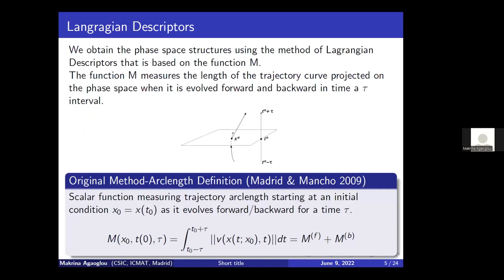The method of Lagrangian descriptors is a scalar trajectory diagnostic similar to other chaos indicators such as Lyapunov exponents or alignment indices. This method has the capability of revealing the invariant manifolds in phase space that characterize the system dynamics — it can reveal stable and unstable manifolds as well as KAM tori. The development of Lagrangian descriptors was originally inspired by the desire to explain the geometrical patterns that govern transport in geophysical flows.